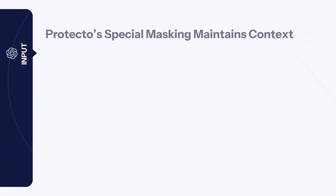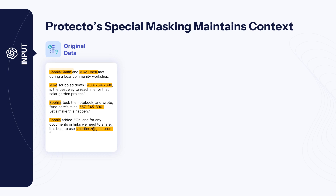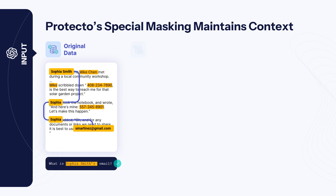Let's take a simple example. Imagine Sarah and Mike are sharing phone numbers and emails. Without masking, an LLM can easily connect the dots — answering questions such as, what is Sarah's email?